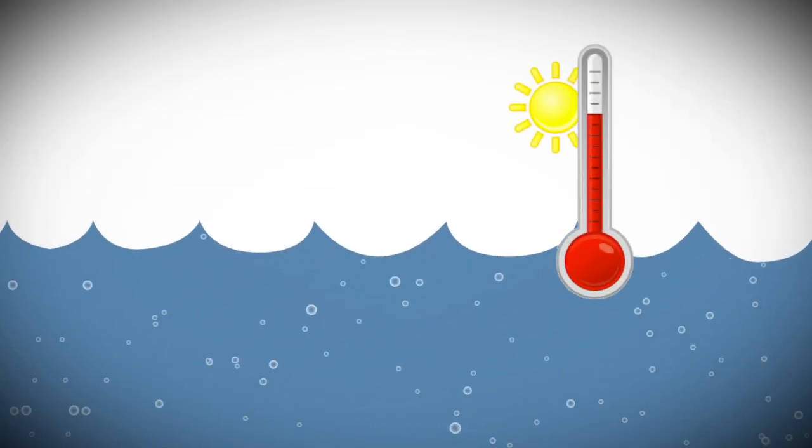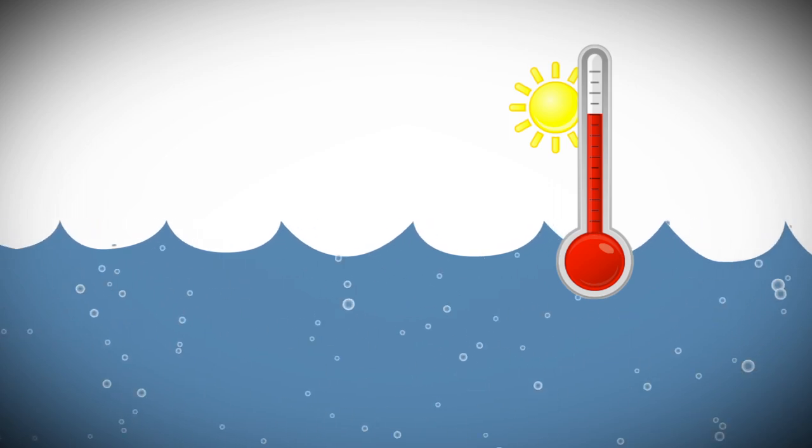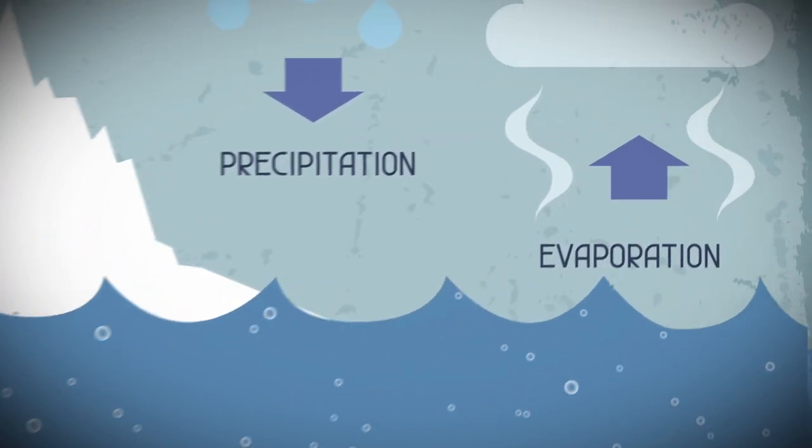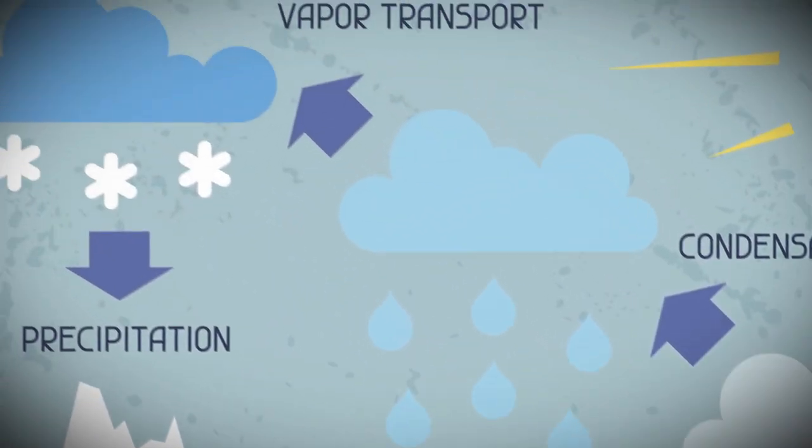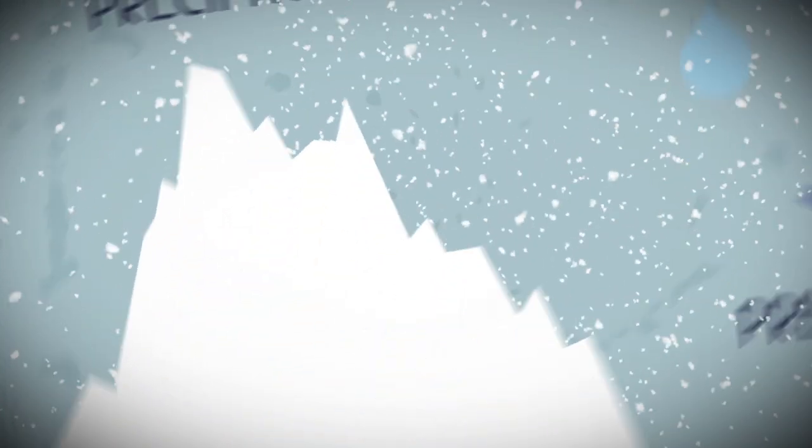Ironically, you need warmer sea surface temperatures to get an ice age started. Extra heat would make more water vapor that would cool high in the sky and then fall as rain or snow. Lots of snow.